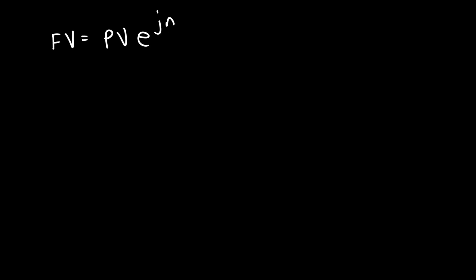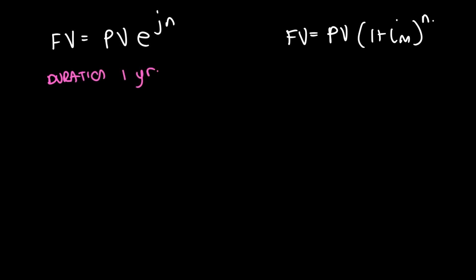We have the future value equal to PV·e^(JN) for continuous compounding, and the future value equal to PV·(1 + iM)^N for compounding period interest. We're going to use a duration of one year, so the N for continuous compounding becomes 1 and drops away, and the N for the compounding period interest becomes M — however many compounding periods there are in the year. I'm just rewriting it to take that into account.